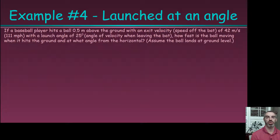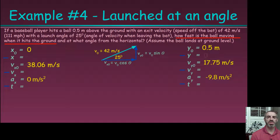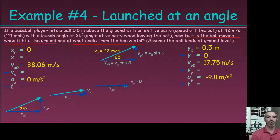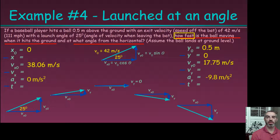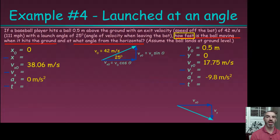Looking at the same problem again: how fast is the ball moving when it hits the ground, and at what angle? We start with the same initial conditions. When it hits the ground, the final y position is zero. We want the total velocity at impact — not just the x or y component, but the velocity vector at an angle. We know the initial x-velocity is 38.06 meters per second, so we need to find the final y-velocity.